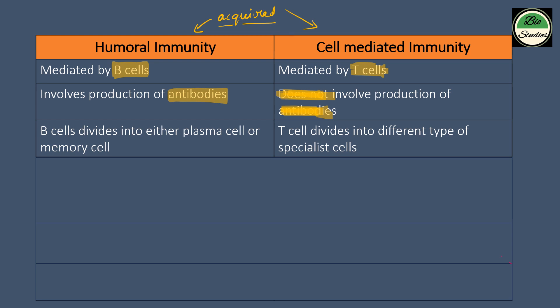Humoral immunity involves B cells. These B cells differentiate into plasma cells and memory cells. The plasma cells are responsible for the production of antibodies.